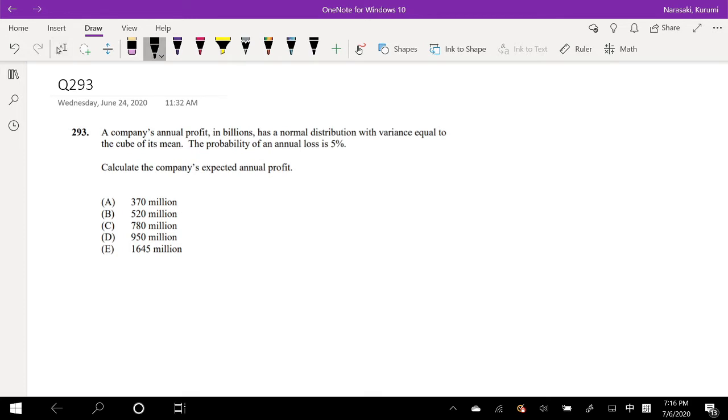Assuming you've already attempted it, let's just dive right in. A company's annual profit in billions has a normal distribution with a variance equal to the cube of its mean. The probability of annual loss is 5%.